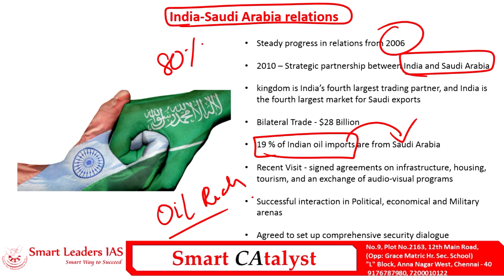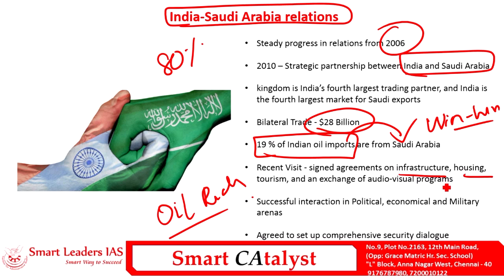The bilateral trade between India and Saudi Arabia is valued at about 28 billion dollars. Saudi Arabia is India's fourth largest trading partner, and India is also Saudi Arabia's fourth largest trading partner, making it a win-win relationship. Recently, the Crown Prince of Saudi Arabia visited India, during which a series of agreements were signed, especially in the areas of infrastructure, housing, tourism, and exchange of audio-visual programs. Negotiations also took place in political, economic, and military areas, and a comprehensive security dialogue was established to address security issues in the Asia region.